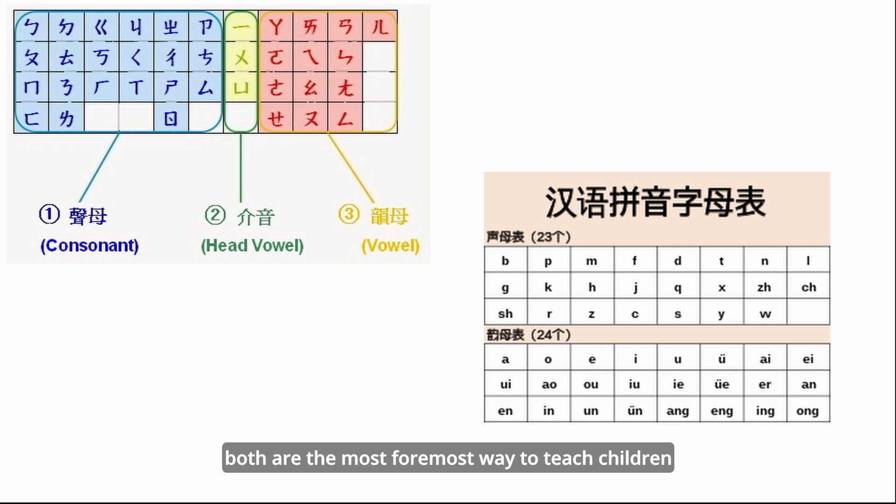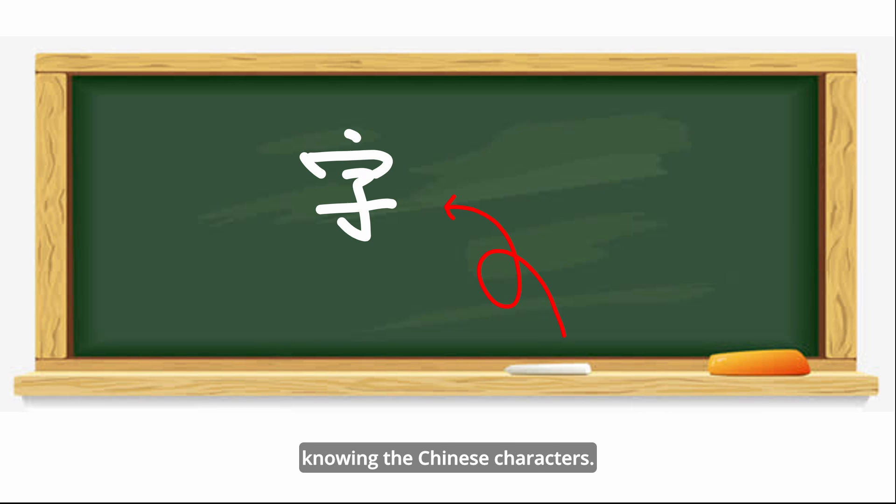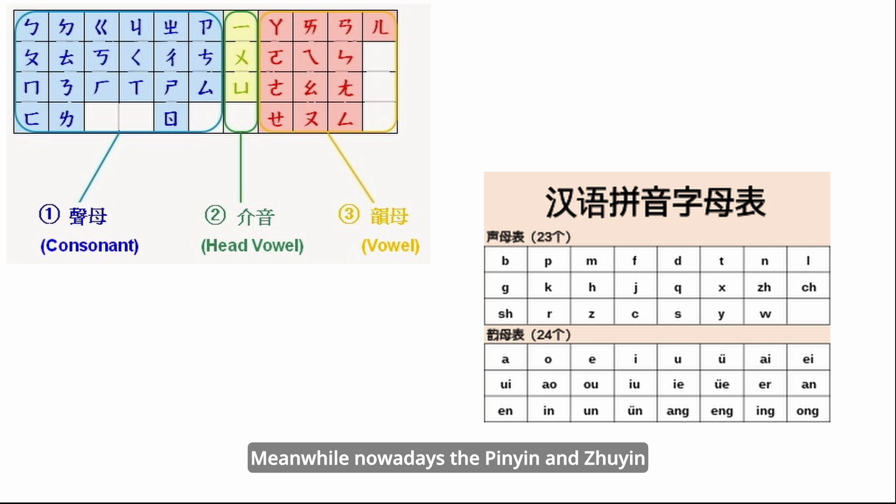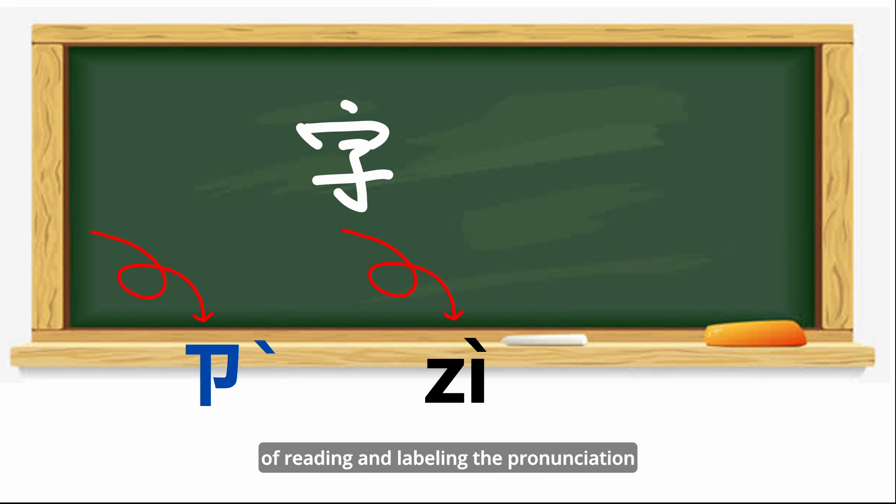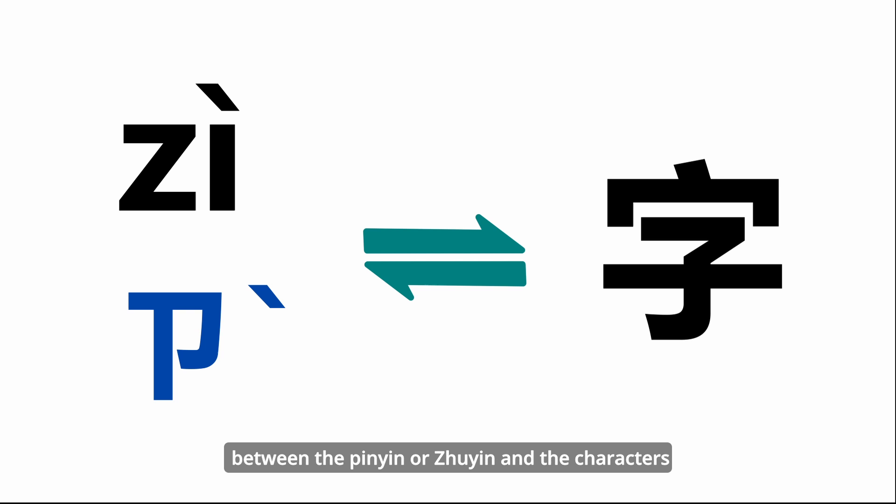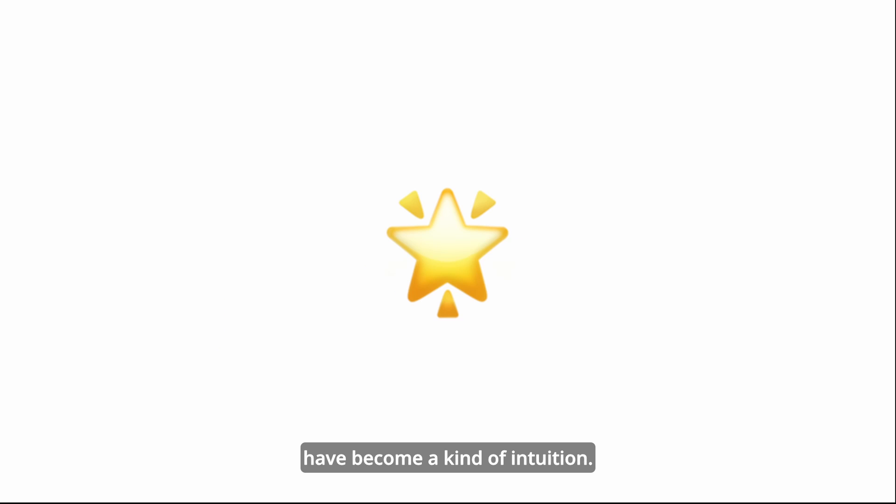Notice that pinyin and Zhuying are also the most common tools for reading and learning the pronunciation of Chinese characters for almost every person, not only children but adults. So for most people, transformation between the pinyin or Zhuying and the characters have become one kind of intuition.